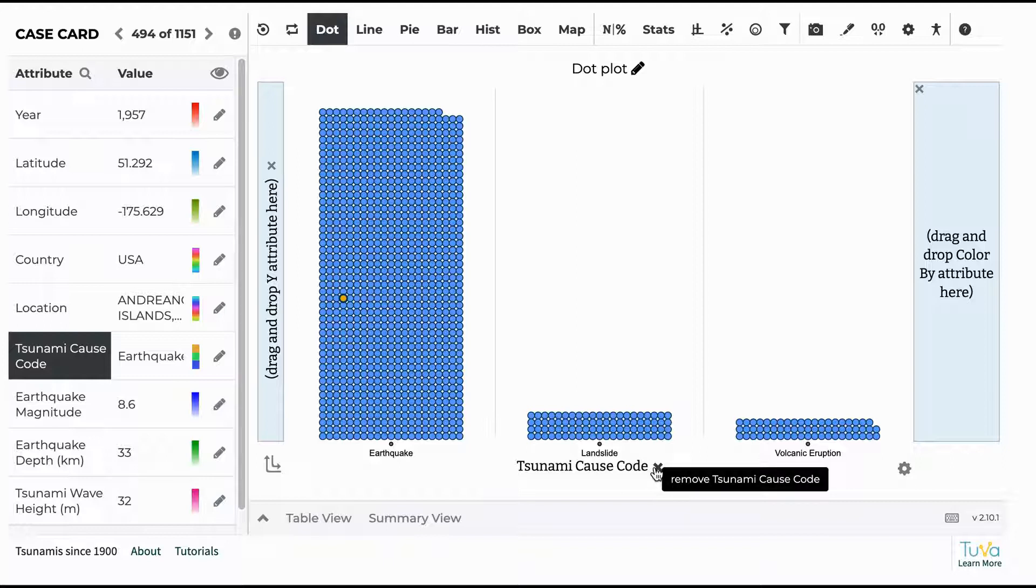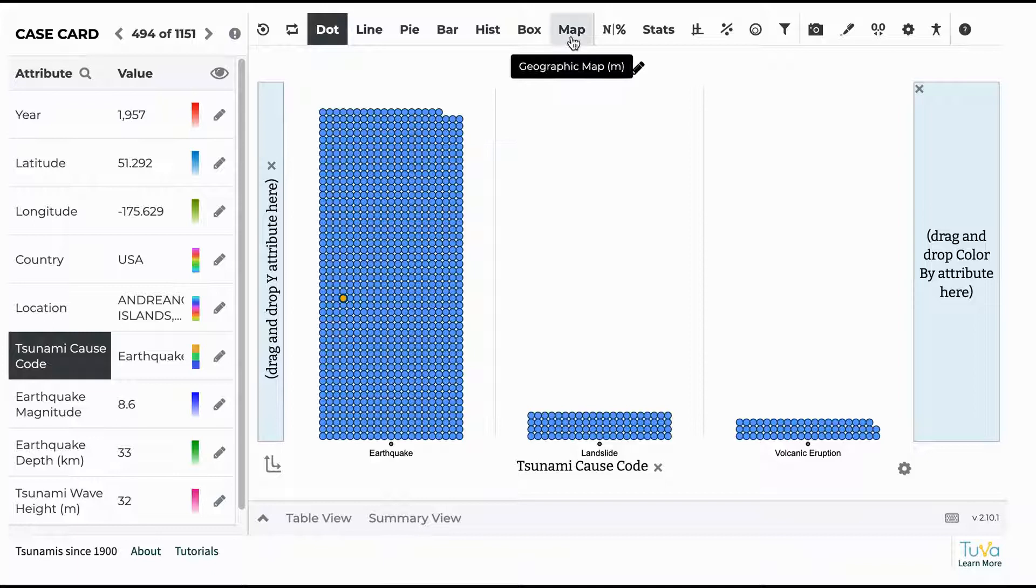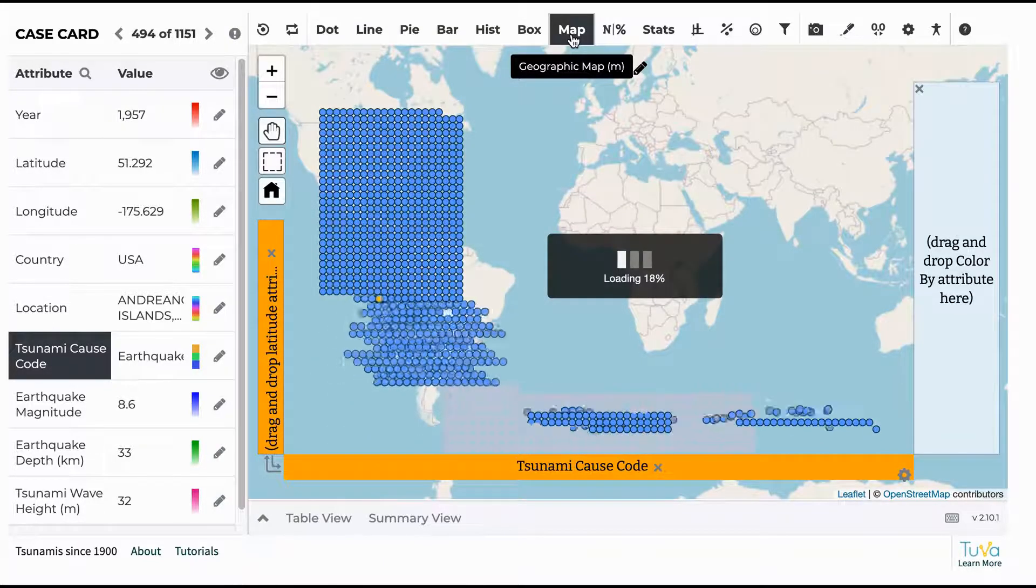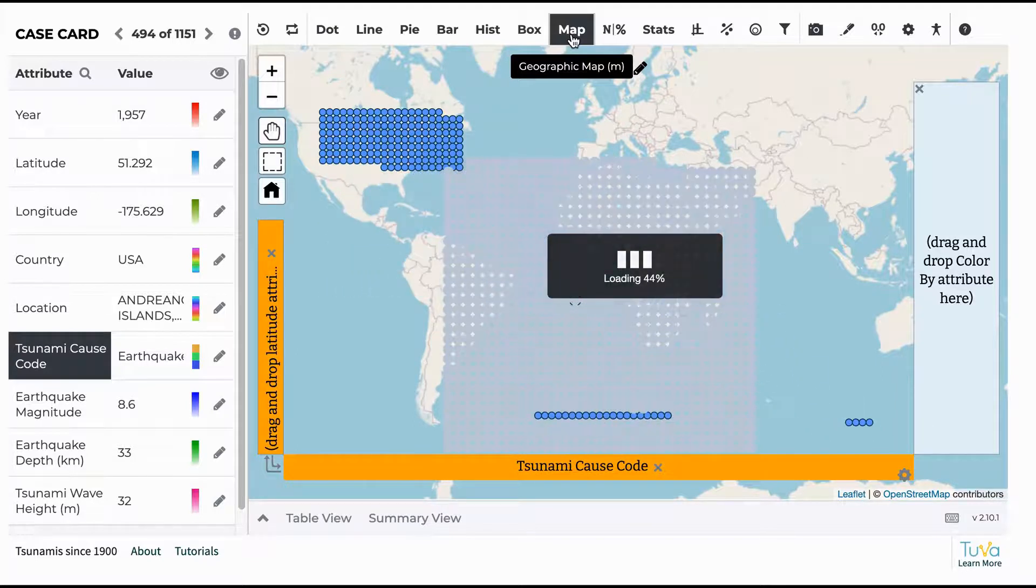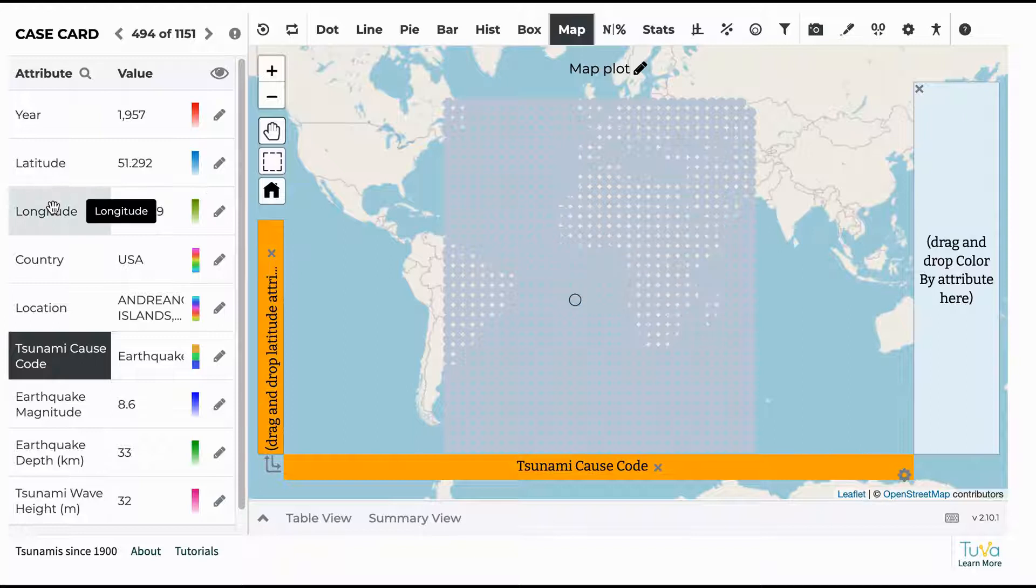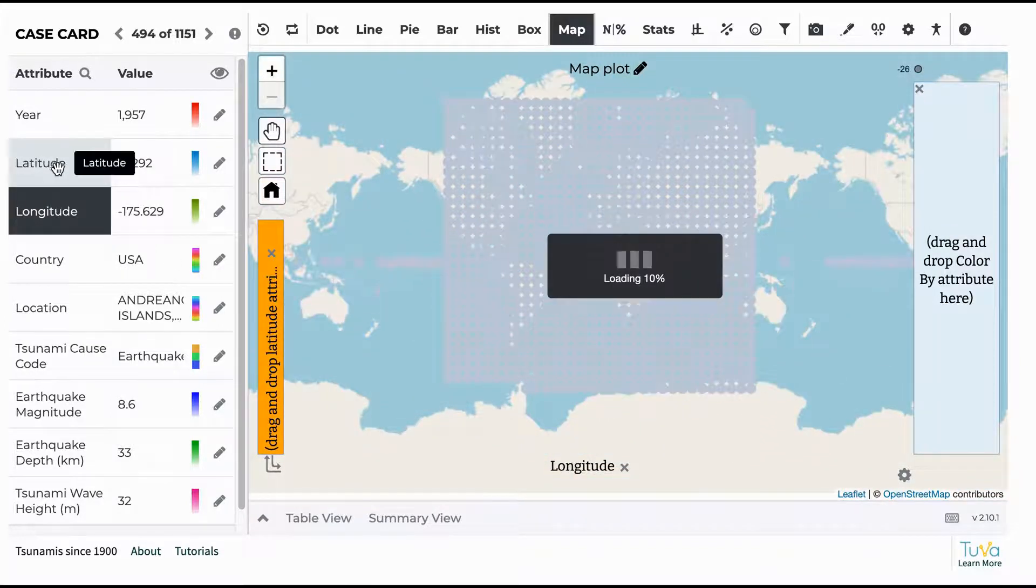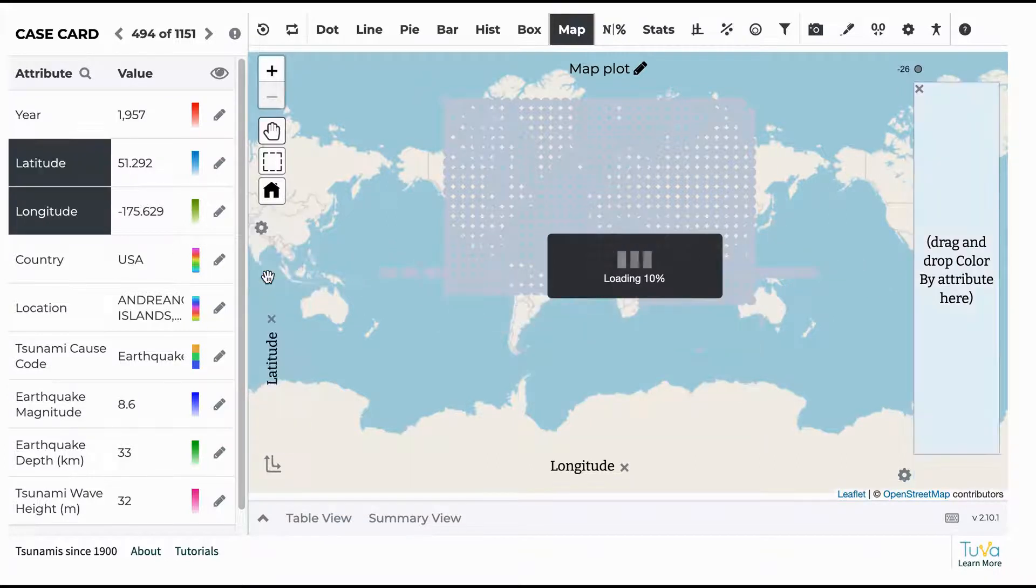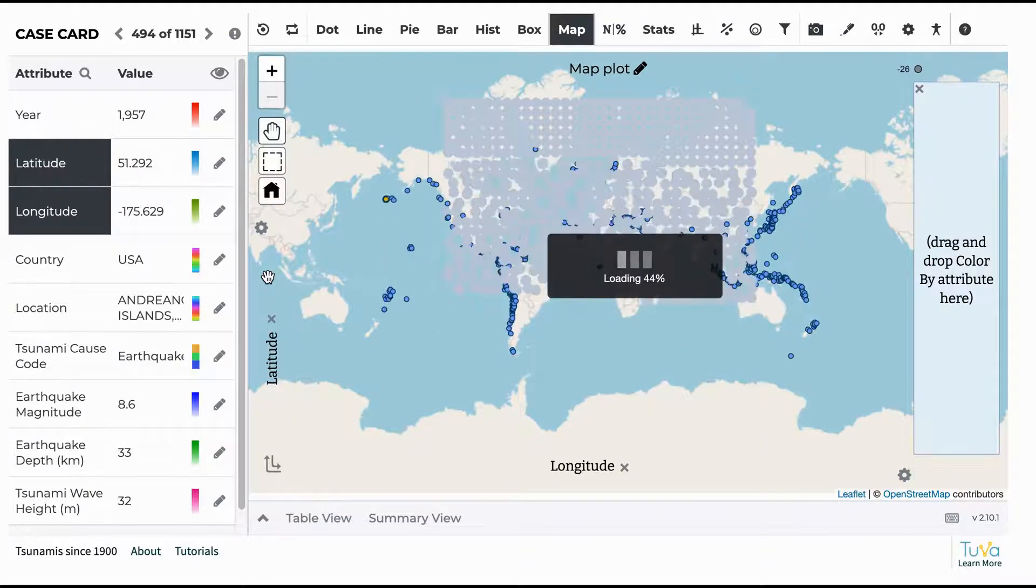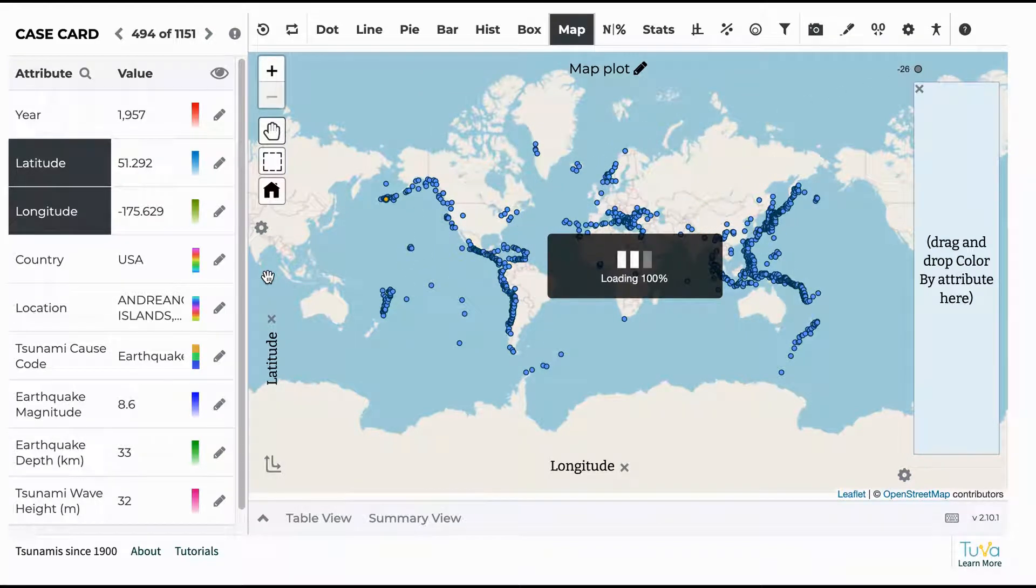And then the final thing I'll say is that they can also, these are dots, but they can click the map button because latitude and longitude is here and it will actually build out. And they would have to drag longitude and latitude onto the map, but it will actually build out a map of all the tsunamis since 1900 if that's something that they want to see.